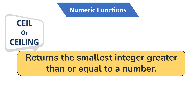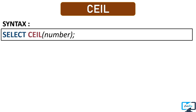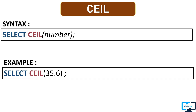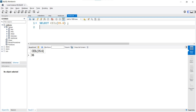Our next numeric function is CEIL or CEILING. This function returns the smallest integer which is greater than or equal to the specific number. Basically this CEIL function rounds the number away from zero and always goes up. We just have to pass the number as parameter. For example, passing 35.6 — after executing the query, our output is 36, which is the smallest integer greater than 35.6. You can use either CEIL or CEILING; both work the same.